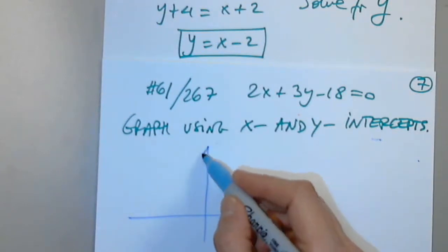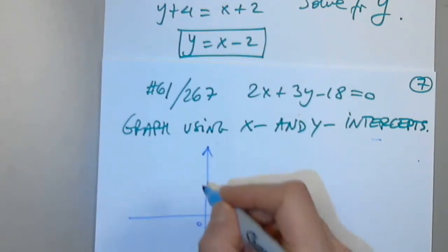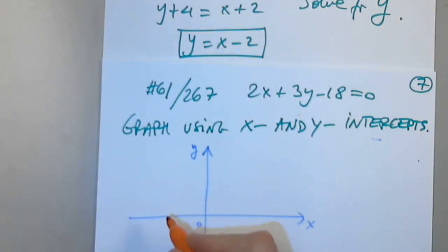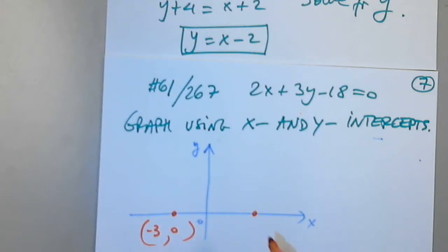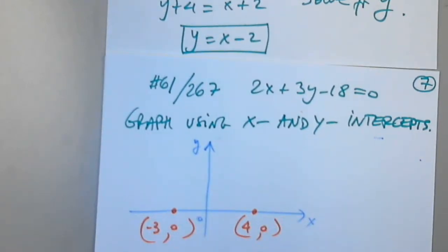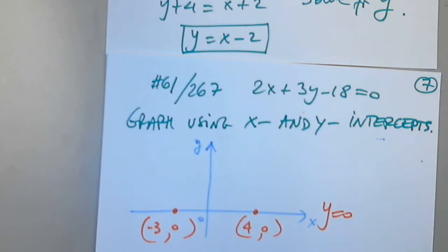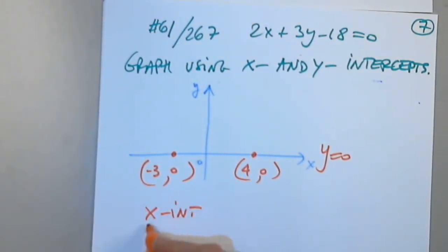Let's take a look at a coordinate system. This is the x-axis and this is the y-axis. Can anyone make up a point on this axis? Negative 3, 0. All points on the x-axis have y equal to 0, so the equation of that line is y equals 0. So when I want to determine the x-intercept, I set y equal to 0.